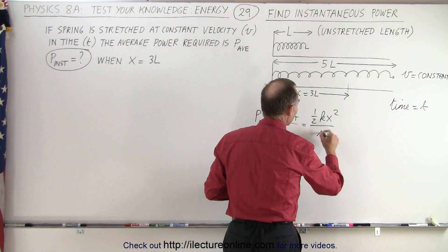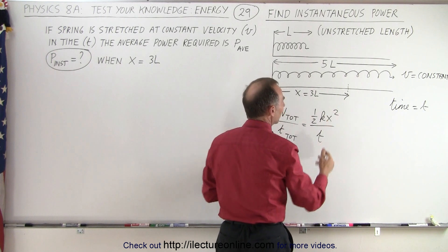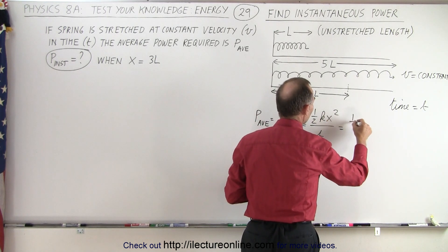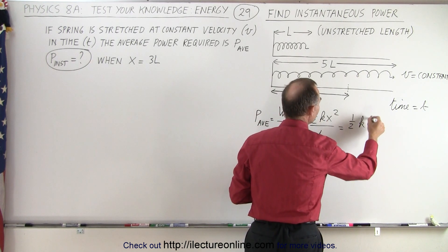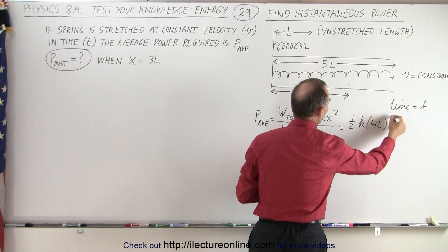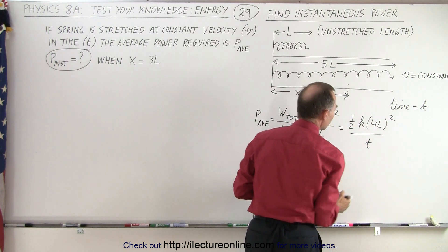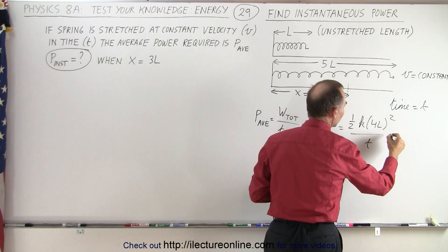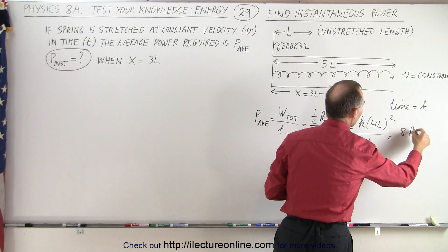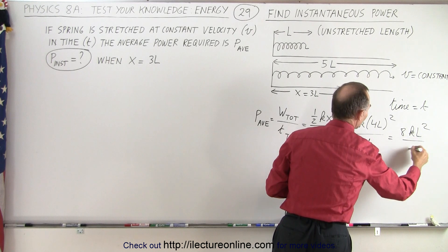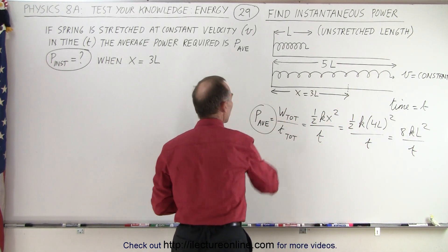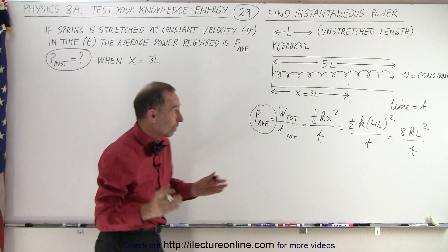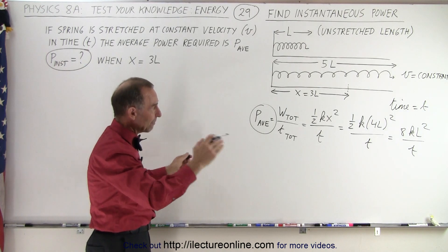And of course X in this case will be 4 times L, so this would be equal to 1/2 times K times 4L squared divided by time. And so 4 squared would be 16, divided by 2 would be 8, so this would be 8KL squared divided by T. And so that would be the average power required to stretch the string from L to 5L.